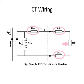Now let us see the CT wiring diagram. This one is the current transformer with the primary side and the excitation current. Rct is the CT secondary winding resistance at 20 degrees centigrade, RL is the connecting lead resistance, and Rb is the relay burden.